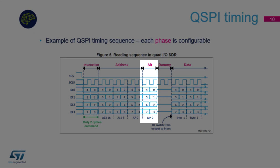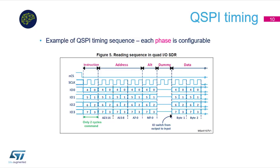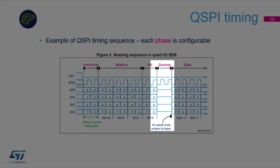Next is the alternate byte phase. This is an extra phase offering more flexibility and is generally used for controlling the mode of operation. For instance, one byte can be sent continuously to keep the Quad SPI device in the operating mode. After that come dummy cycles: this phase is needed in some cases when operating at high clock frequencies, allowing enough turnaround time for changing the data signal from output mode to input mode.